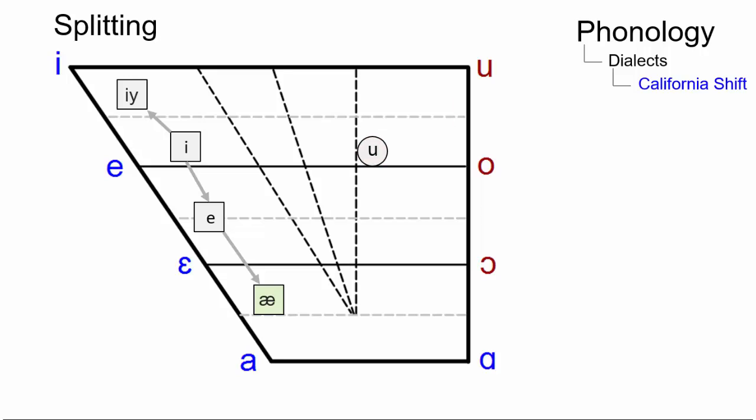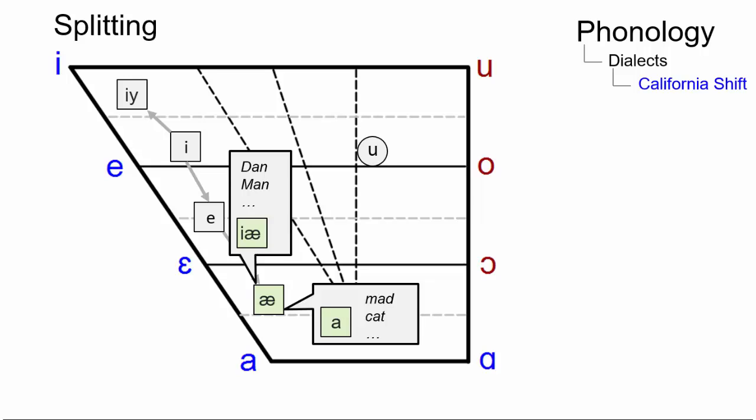Furthermore, there is a short A split. Before nasal consonants, it becomes a diphthong where the first part is shifting towards long E. Before other consonants, it shifts in the other direction.